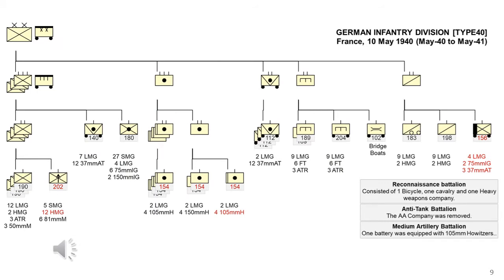While the 1st and 4th wave infantry divisions generally stayed unchanged, subsequent waves had a slightly different structure. It's possible this different structure was also implemented on the first four waves by May 1940, but I have no evidence either way. The number of HMGs in the heavy weapons companies was increased to 12. The anti-tank battalions lost their 2cm flak guns, and the reconnaissance battalion was altered again with a hybrid structure — likely part of the move from horse-mounted to cycle-mounted reconnaissance.